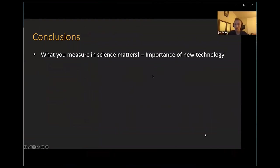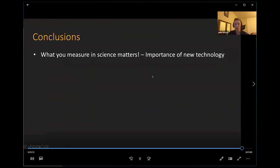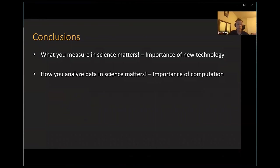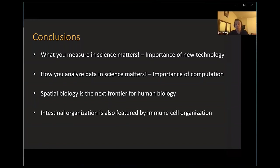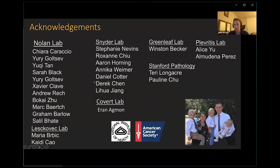In conclusion: what you measure in science matters. How you analyze data in science matters — you can have the same data but analyze it in many different ways, and it might tell you different things, so complementary analyses are important. This is also why funding for computational research is essential to complement new technology. Spatial biology, like what I described today, is truly a next frontier for human biology and will pave the way for many new discoveries. Feel free to email me with questions. Thanks.